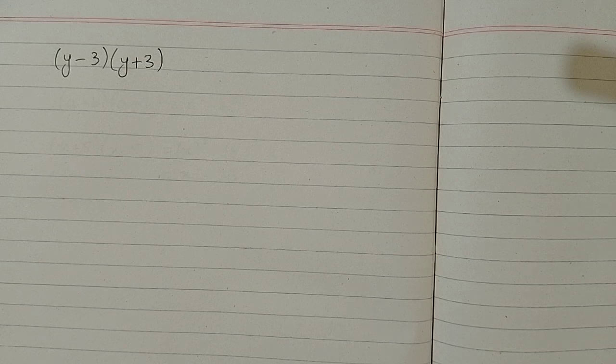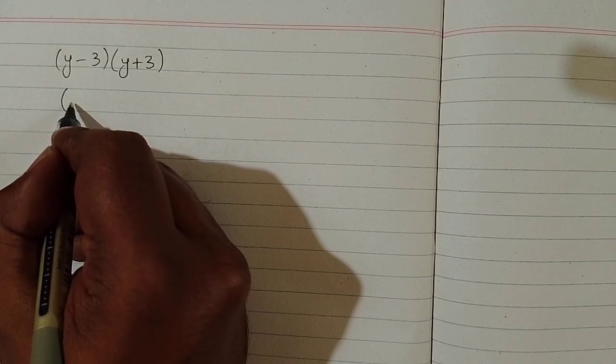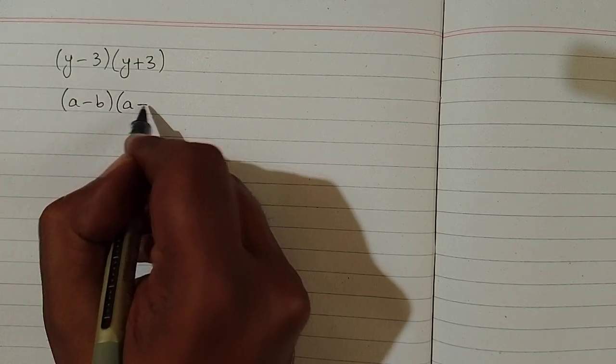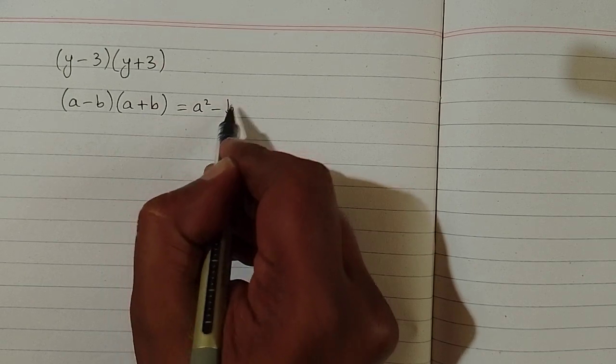In this video we will find the product of (y-3) and (y+3). We will use an algebraic identity which is (a-b) multiplied by (a+b) is equal to a² minus b².